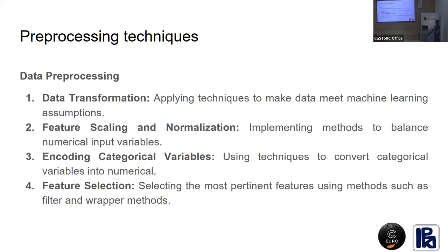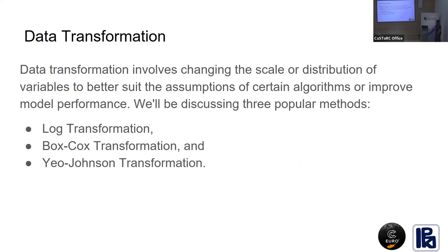Now we move to data preprocessing. Data preprocessing covers data transformation, feature scaling, normalization, encoding of variables, and feature selection. Data transformation involves taking data in a specific scale or distribution and changing that scale or distribution. We will discuss three techniques: log transformation, Box-Cox transformation, and Yeo-Johnson transformation.